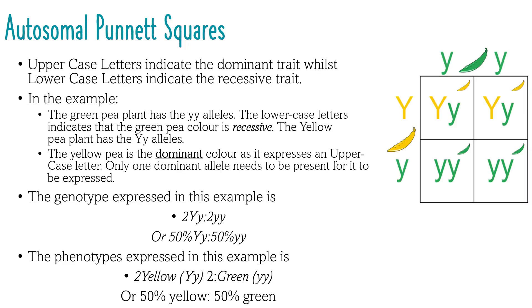Autosomal Punnett squares are probably the most common type you have seen before. Dominant traits are represented by an uppercase letter and recessive traits are represented by a lowercase letter. It is important that the same letter is used. It is also good to use letters that have distinct upper and lowercase letters like A or B. Letters like W or U can often be difficult to distinguish between the upper and lowercase.